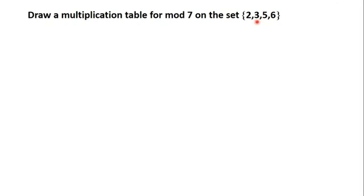The question for this video is: draw a multiplication table for mod 7 on the set {2, 3, 5, 6}. In this question the set of values that we are going to use in the table have been defined for us. This is quite different from the questions we solved in the previous videos, where we are asked to draw a multiplication or addition table for a particular modulus and then list the set of values used in that modulus.